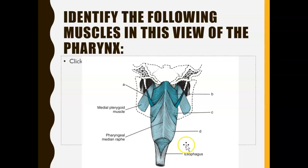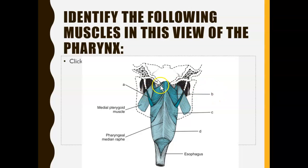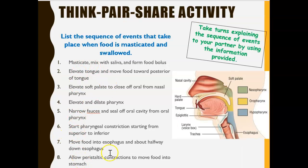Let's review the muscles we looked at. This muscle here originates at the styloid process and ends at the pharynx — that's the stylopharyngeal muscle. This muscle on top is the superior pharyngeal constrictor muscle. This is your middle constrictor, and this is your inferior constrictor muscle. Just know the basic muscles for your test. When food is masticated — meaning chewed — this is the sequence of steps that happens as you chew and swallow.